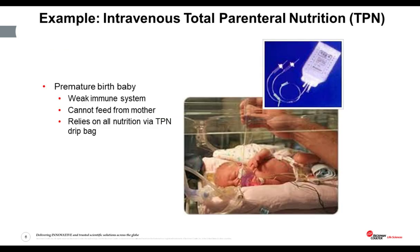This is an extreme example of one of our most vulnerable and weak patients who receive parenteral treatment — a premature baby. Their immune system is immunocompromised. They can't feed from the mother, and we have to feed them and give them their medications using intravenous drip bags, which contain the total parenteral nutrition as well as the balance of drugs needed to keep them alive. If any contamination gets into these TPN bags, it will cause, unfortunately, almost certain death for the baby.